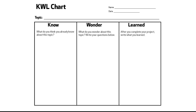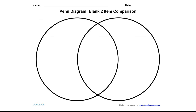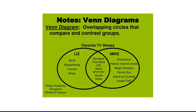A Venn diagram is used to compare two objects. In the outer parts of each circle, write about the individual topic; in the inner overlapping circle, write what they have in common. For example, Liz likes NCIS, Masterminds, and Friends; Mike likes Shockwave, History Channel, and Family Guy; while both like Numbers, The Office, CSI, Monk, MASH, House, and News. Items outside both circles — like Grey's Anatomy, Simpsons, and Wheel of Fortune — are things neither liked.